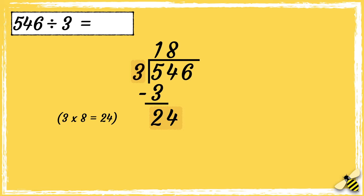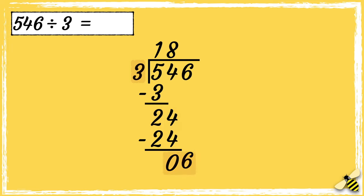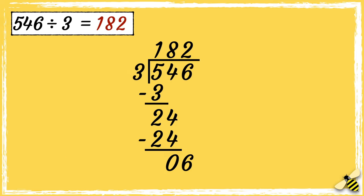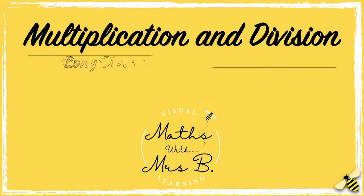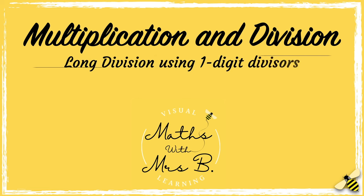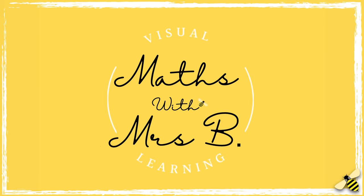We now need to find out what's left over, so 24 take away 24 is 0. We can now bring the third digit down. And finally, how many 3s go into 6? 3 goes into 6 twice. So the answer is 182.